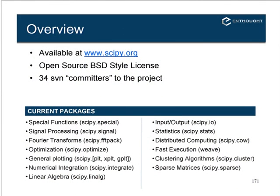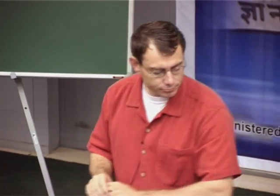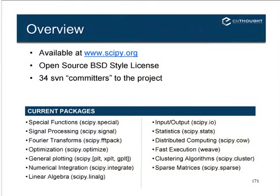For fast execution, Weave is a tool that allows you to integrate C++ code directly into your Python code and pass variables across from Python into C or C++ and back. It's a fairly nice tool especially for prototyping. There are also clustering algorithms and a library for sparse matrices.